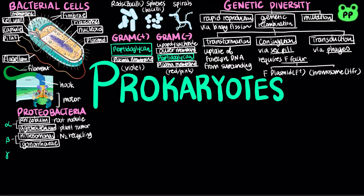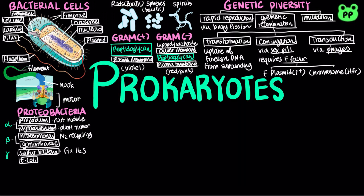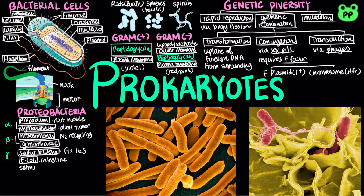Gamma-proteobacteria include chemoautotrophs known as sulfur bacteria that obtain energy by oxidizing hydrogen sulfide, producing sulfur as a waste product. Gamma-proteobacteria also includes E. coli, which is a common resident of the intestines of humans, as well as Salmonella.